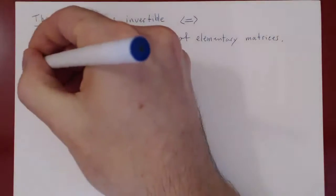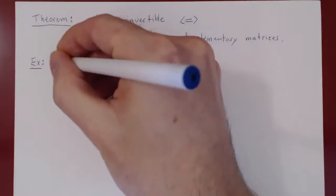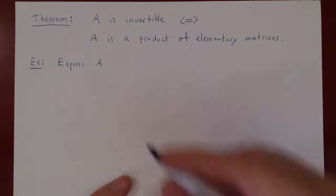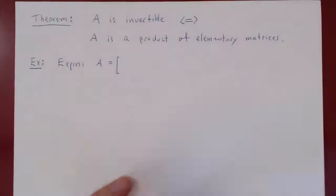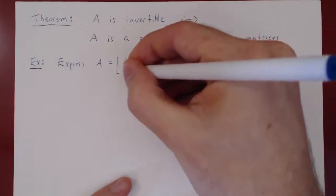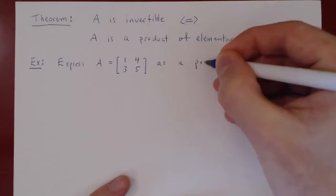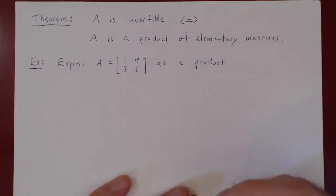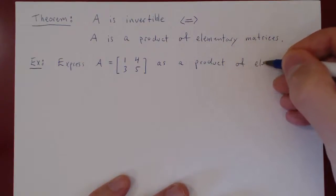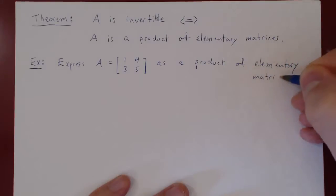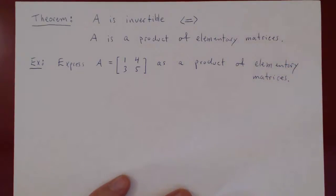Here's the example. We'll express A — we'll take a 2x2 matrix, but this works for any square matrix. So express A, the matrix [[1, 4], [3, 5]], as a product of elementary matrices. Let's first find the inverse, keeping track of each of our row operations, and then we'll see how we can introduce elementary matrices.